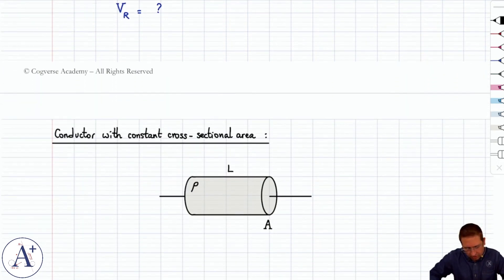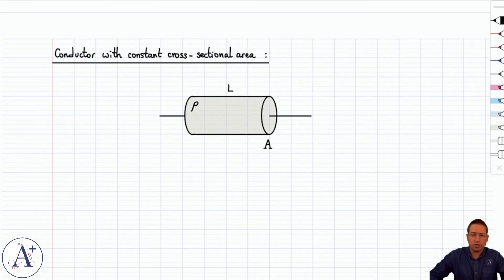But sometimes you compute it, and it'll be clear because you'll have a conductor with constant cross-sectional area, with resistivity ρ, length L, and cross-sectional area A. In that case, a very useful formula is that resistance equals ρL divided by A.